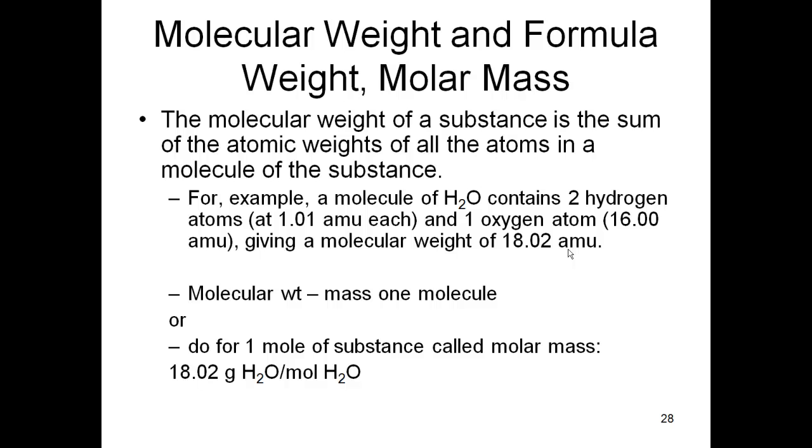If I was going to talk about formula weight, that's a case where we're talking about ionic substances such as sodium chloride. You add them up the same way, you look on the periodic table. Sodium is 22.99, chlorine is 35.45, add that up and you get the mass in AMU. That's the formula weight of one formula unit of sodium chloride.